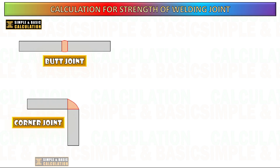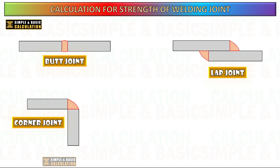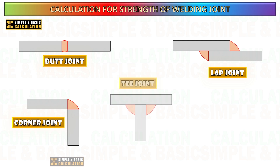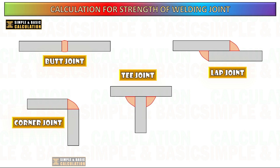Butt joint: two pieces placed edge to edge, common in pipelines and structural beams. Corner joint: two pieces joined at a right angle, used in frames and sheet metal work.